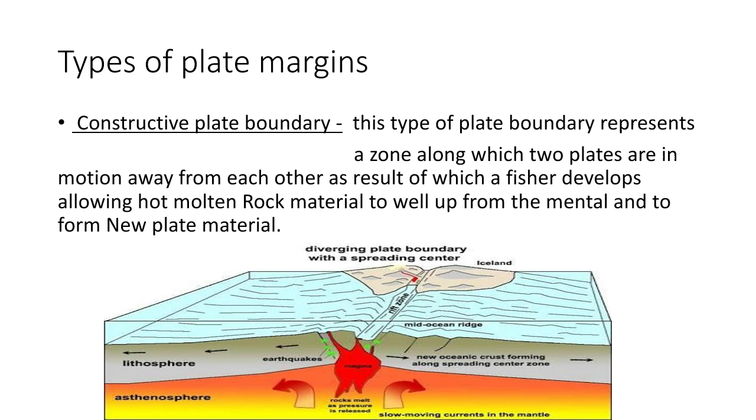Now comes to the types of plate margins. First one is constructive plate boundary. Constructive plate boundary is also termed as divergent plate boundary. This type of plate boundary represents a zone along which two plates are in motion away from each other, as a result of which a fissure develops, allowing hot molten rock material to well up from the mantle and to form new plate margins.